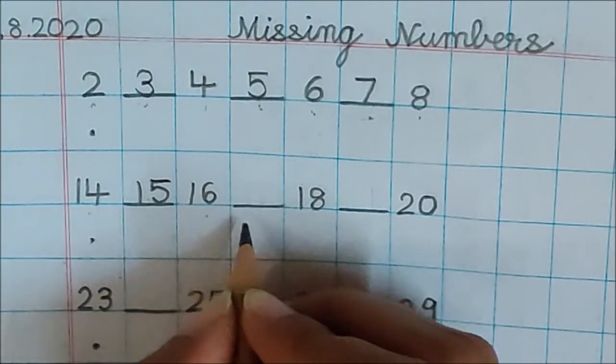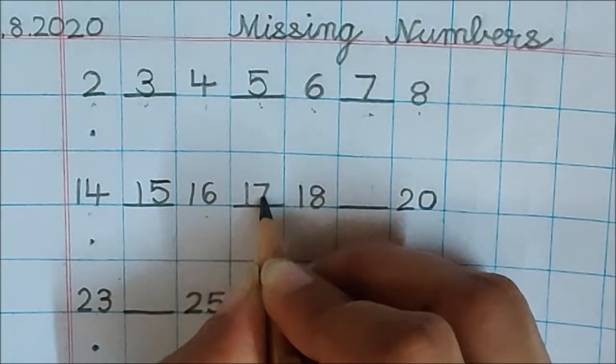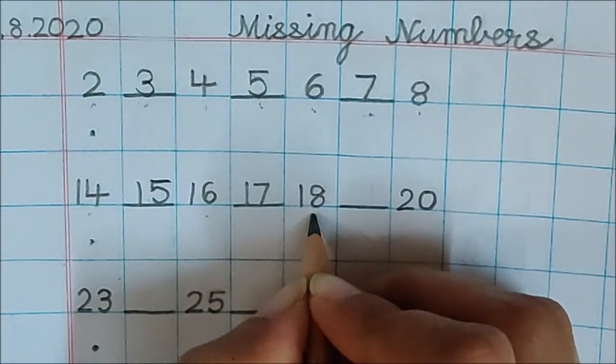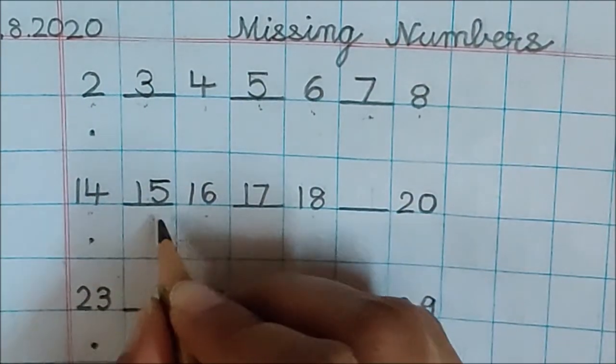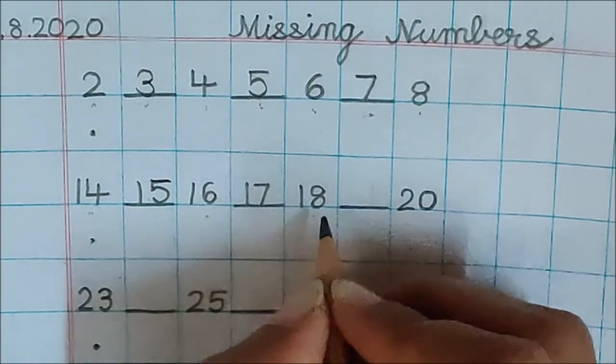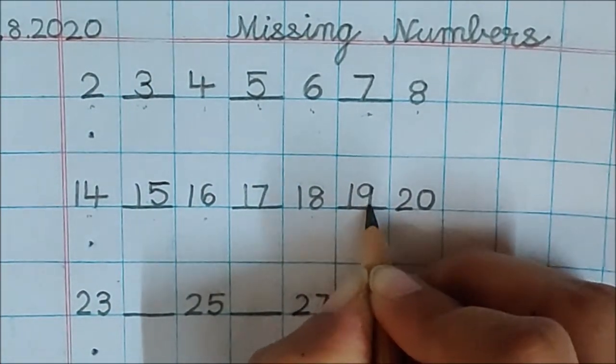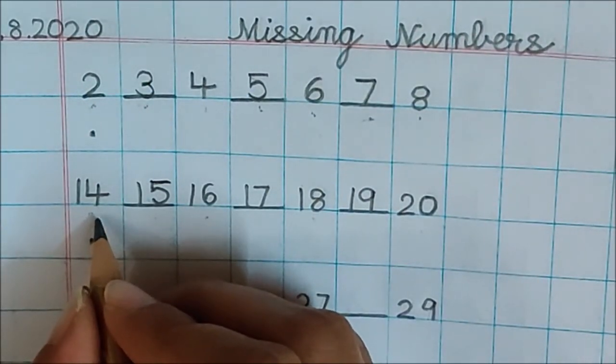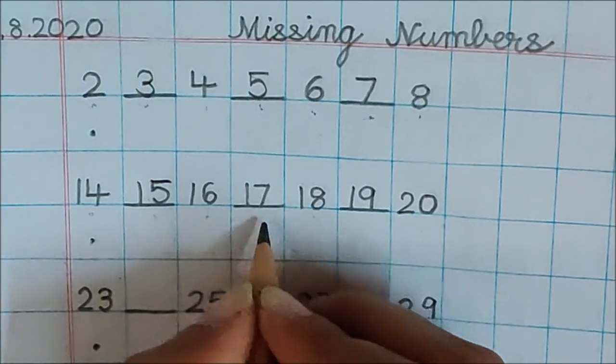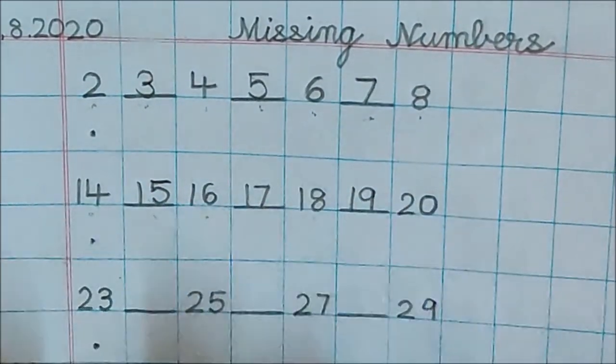14, 15, 16, 17, 18, what comes after 18, children? 14, 15, 16, 17, 18, 19, 20. Check one more time. 14, 15, 16, 17, 18, 19, 20. Are all the answers correct?